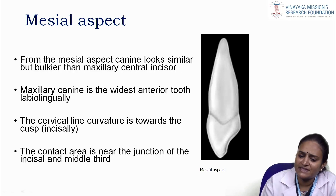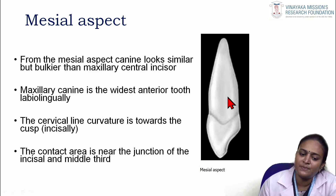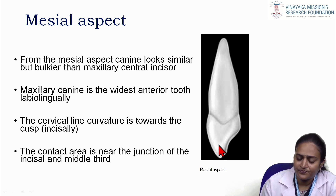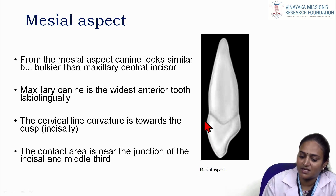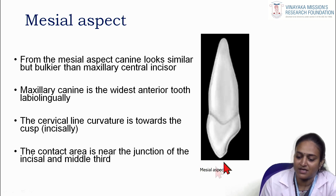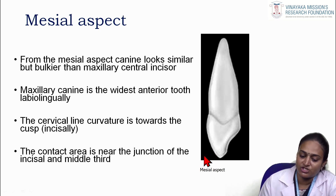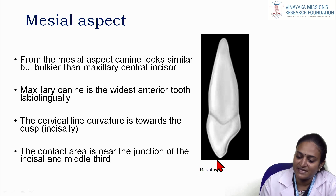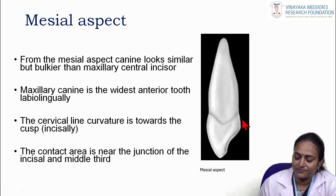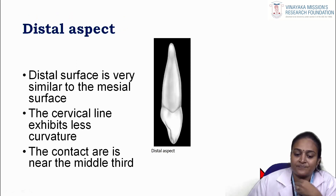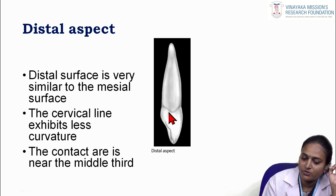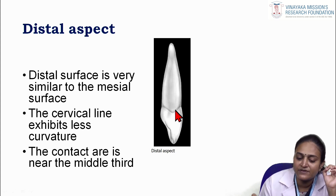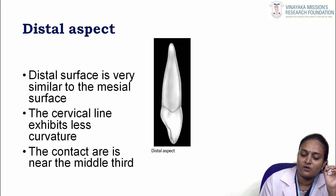From the mesial aspect, canines look similar to but bulkier than the maxillary central incisors. The maxillary canine is the widest anterior tooth labiolingually. The cervical curvature is towards the cusp, and the contact area is near the junction of the incisal and middle thirds. The distal surface is very similar to the mesial surface, but the cervical line exhibits less curvature, and the distal contact area is near the middle third.